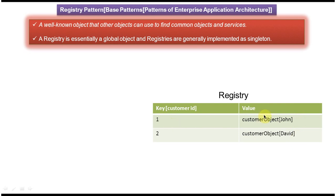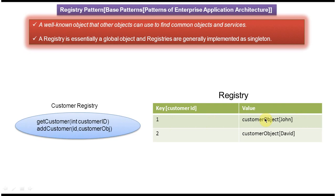Using the key you can identify the corresponding customer object. The customer registry class will look like this. Suppose we want to get customer object John — we call the method getCustomer and pass customer ID S1. Once you pass customer ID S1, this method will return customer object John. If you pass customer ID S2, this method will return customer object David. In this way, from the registry we can get the particular customer object, which will be used by some other object for business logic.